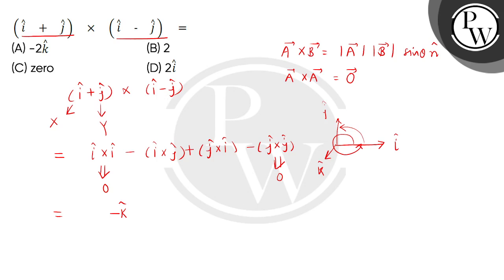For the third term, j cross i, which is a clockwise move, we get k cap. So this equals minus k cap plus k cap, which equals minus 2 k cap. Looking at the options, the correct answer is option A.